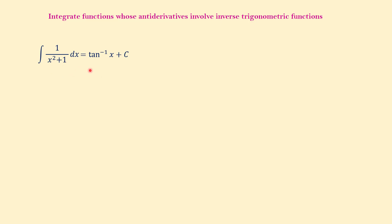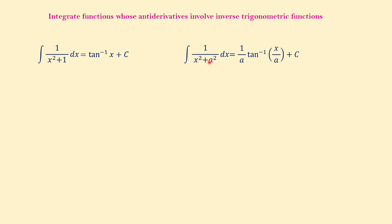Before doing an example, let me show you the generalized form of this formula. If we have an integral in the form of 1 over (x² + a²), where a can be any number — for example 2, 3, 1/2, √3, √2 — the integral equals 1/a · arctan(x/a) plus c. I highly recommend you learn and use this generalized formula, because with it you can integrate a broad range of functions, whereas the original form only handles 1 over (x² + 1).